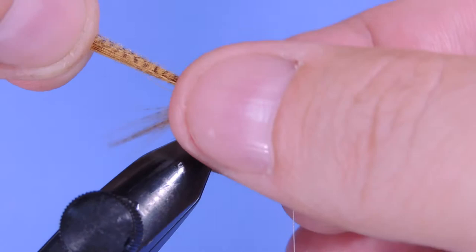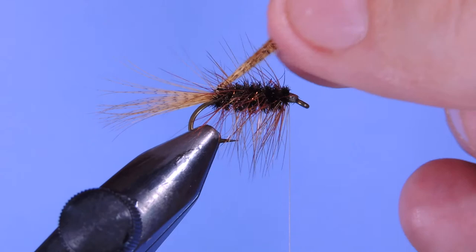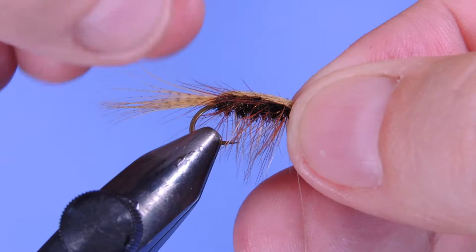So now I just like to take my thumb and forefinger. We're just going to kind of separate the hackle and pull it down. You want to make sure that you don't mix up the shell back in the tail.